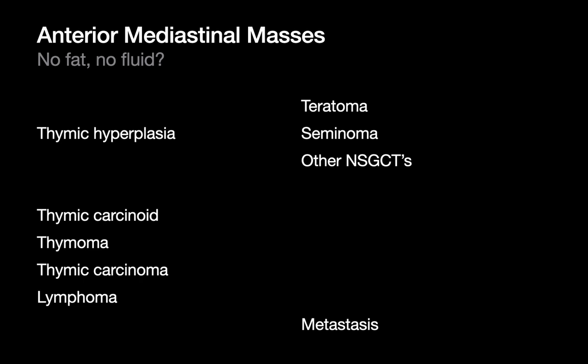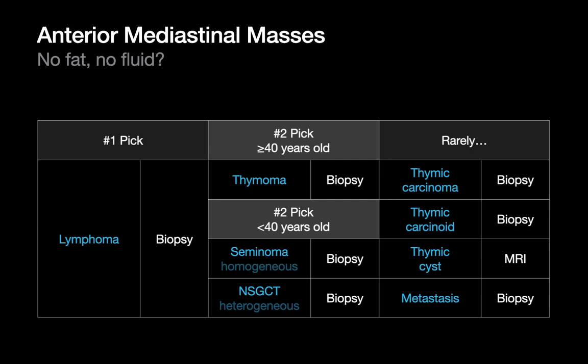If you have a list this long, what do you do? It turns out the most helpful thing is to know what the odds are — what's common, what's less common. The most common cause of an anterior mediastinal mass in virtually all age groups is lymphoma. In these patients, you may look for other sites of potential lymphoma in the chest or the rest of the body, and check the medical record for any evidence of B symptoms like fever, malaise, or weakness.